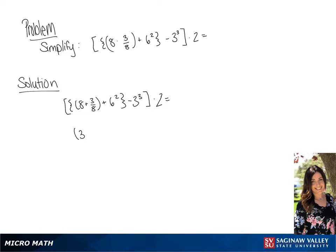So in our parentheses, we're going to have 3. 6 squared is going to be simplified to 36. And negative 3 cubed is going to be simplified to negative 27.